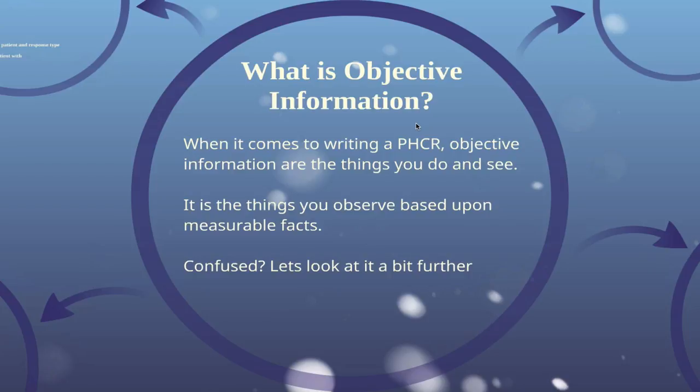So what is objective information? When it comes to writing a PHCR, objective info are the things that you see and do. They're the things that you observe based upon measurable facts. And if you're confused a little bit, don't worry — we're going to explain everything further and give you some answers to your questions.